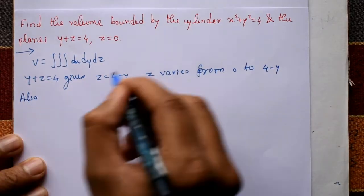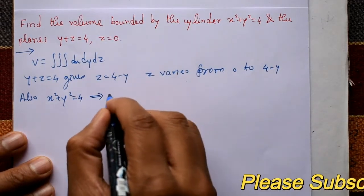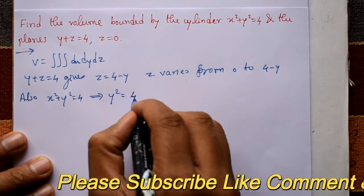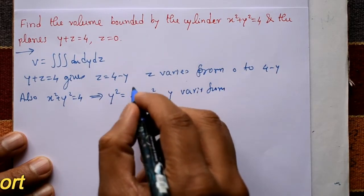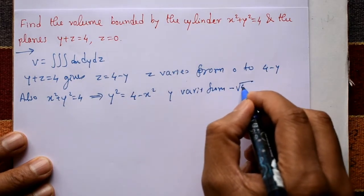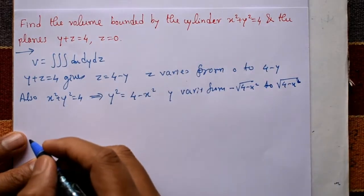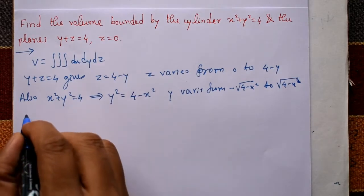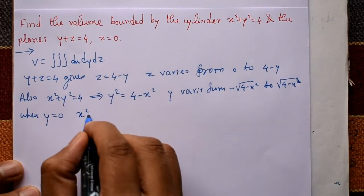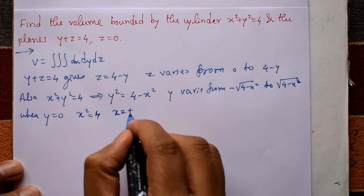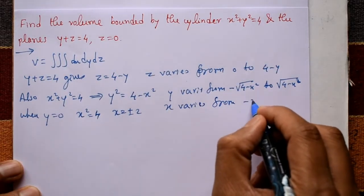Next, taking the equation x squared plus y squared equals 4, y squared equals 4 minus x squared, so y equals plus or minus square root of 4 minus x squared. So y varies from minus square root of 4 minus x squared to plus square root of 4 minus x squared. When y equals 0, x squared equals 4, so x equals plus or minus 2, meaning x varies from minus 2 to plus 2.